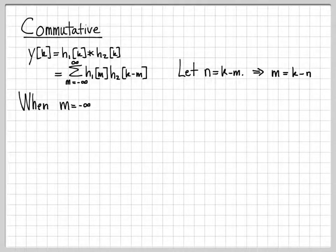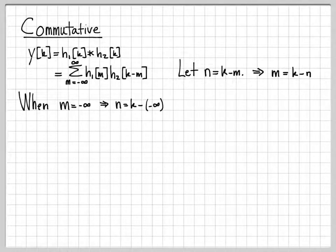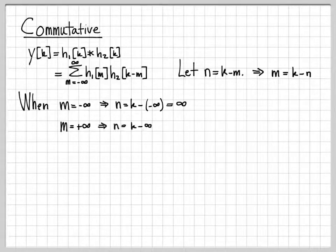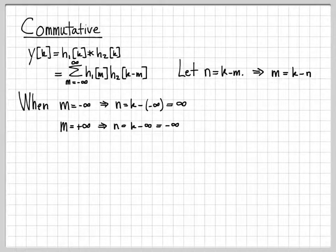When m is equal to minus infinity, then n from this equation is equal to k minus negative infinity, or it's equal to positive infinity. And when m is equal to positive infinity, then n is equal to k minus infinity, or minus infinity. So we've successfully computed the two limit substitutions we need for the change of variable — the bottom and top limits for m, and we now know the corresponding values for n.